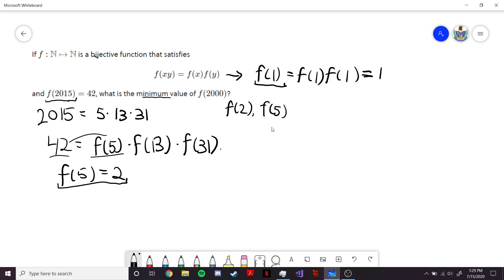So, now we want to find out what will be the smallest value f(2) can be. Well, now we have that f(13) and f(31), these multiply to 21. And since neither of these can be 1, that means neither of them can be 21. Because if one of these were 21, that would force the other one to be 1.